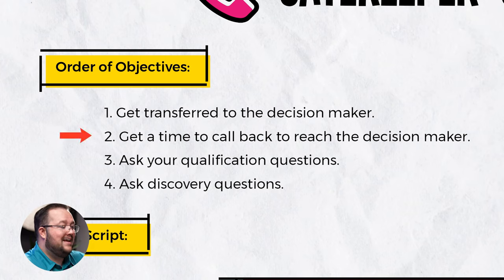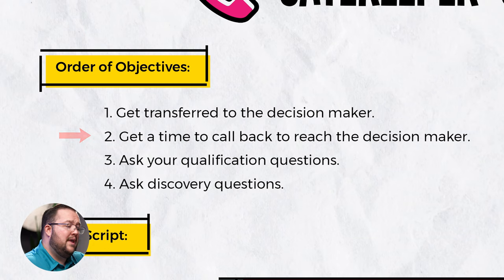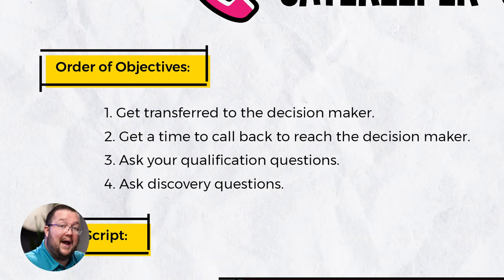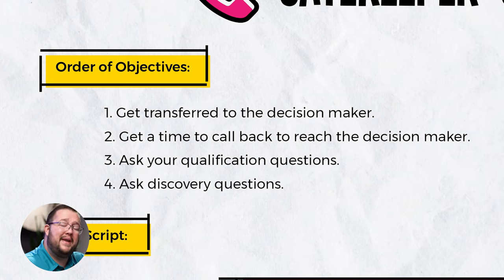The second objective is to get a time to call back and reach the decision maker. It blows my mind how many people skip this step. You can just ask the gatekeeper for a better time to call back, and when you call back at that time, your likelihood of getting the decision maker on the phone is a lot higher. So make sure you're asking that as your second objective.